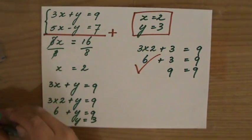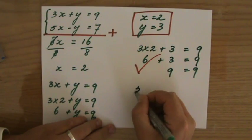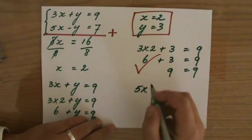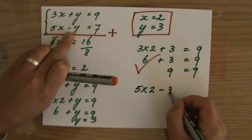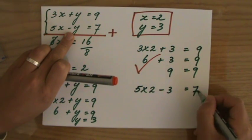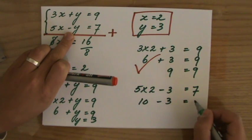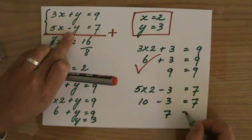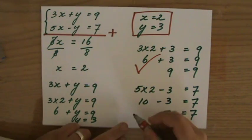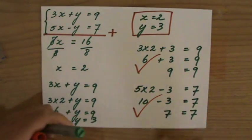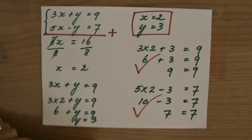But, you always have to check both equations. So, let's look at the other one. 5 times x, 5 times 2, minus y, minus 3. And, that has to be 7. 5 times 2 is 10, minus 3. And, you already see that 7 equals 7. Well, that is correct. 7 does equal 7. So, that is also checked. The left-hand side of the equation equals the right-hand side of the equation.